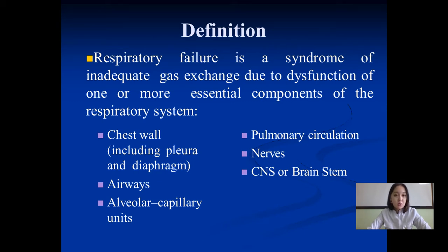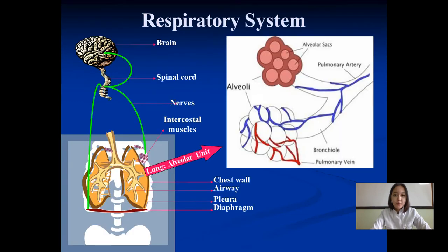That means we will have disorders at the chest walls, airways, alveolar-capillary units, pulmonary circulation, nervous system, CNS or brainstem. Here you will see the anatomy of the respiratory system — the brain, spinal cord, nerves, intercostal muscles, lungs, and alveolar unit.